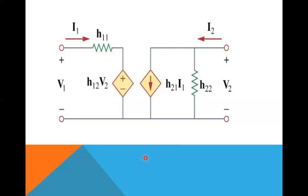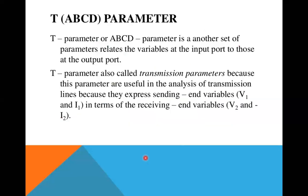The next parameter set is the ABCD parameter, also called T parameters or transmission parameters. They relate the variables at the input port to those at the output port. These parameters are useful in analysis of transmission lines because they express sending-end variables v1 and i1 in terms of receiving-end variables v2 and i2.